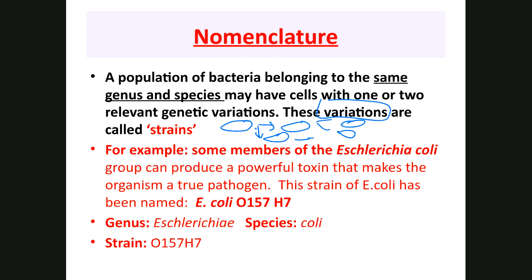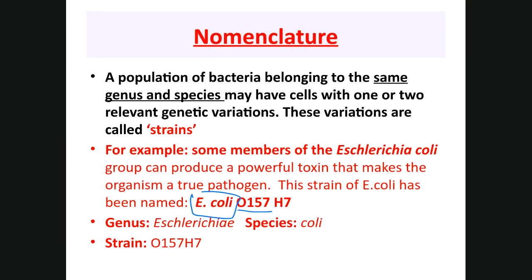Another example: Haemophilus influenzae — Haemophilus is the genus, influenzae is the species (and no, it does not cause influenza — it's a misnomer). All of us carry Haemophilus influenzae in our throats. There is a strain called type B (Haemophilus influenzae type B) which is pathogenic and can cause meningitis. The 'B' is the strain. There are no rules for strain names — whoever identifies the strain gets to name it.